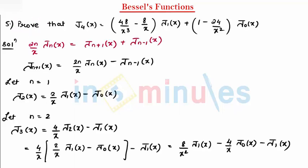Now, the next step: after getting this, I got J3(x) is equal to—from the first term and the last term, you can take J1(x) common. So, J1(x) as common, we can write (8/x² - 1), and minus 4/x J0(x). So, this I got as J3.